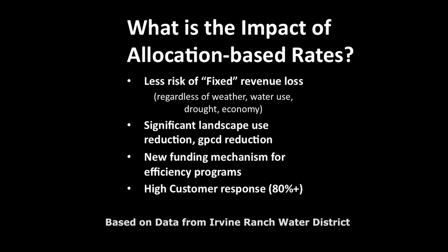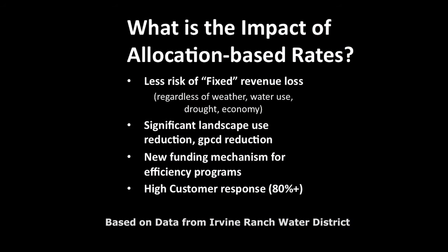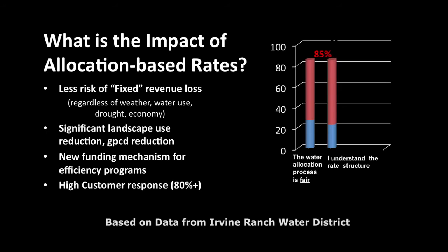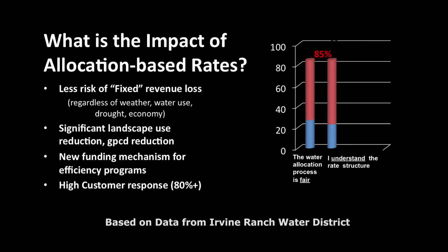What's the impact of allocation-based rates for agencies that have implemented them? There's certainly less risk of fixed revenue loss. We saw significant landscape reduction first — that was really the sector, whether residential or commercial, where we saw the largest drop in water use. It created a new funding mechanism for agencies to have conservation funds. At agencies with allocation-based rates, 80% or more meet the allocations. When surveyed on whether the allocation process is fair and whether they understand the rate structure, both questions received an 85% positive response rate.